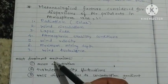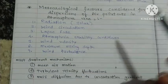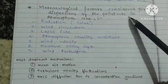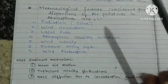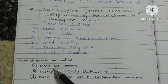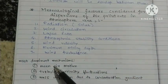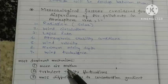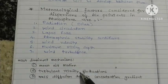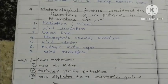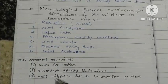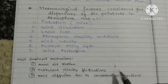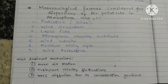Sometimes the most dominant mechanisms for the dispersion of air pollutants in the atmosphere are: mean air motion, turbulent velocity fluctuations, and mass diffusion due to the concentration gradient.